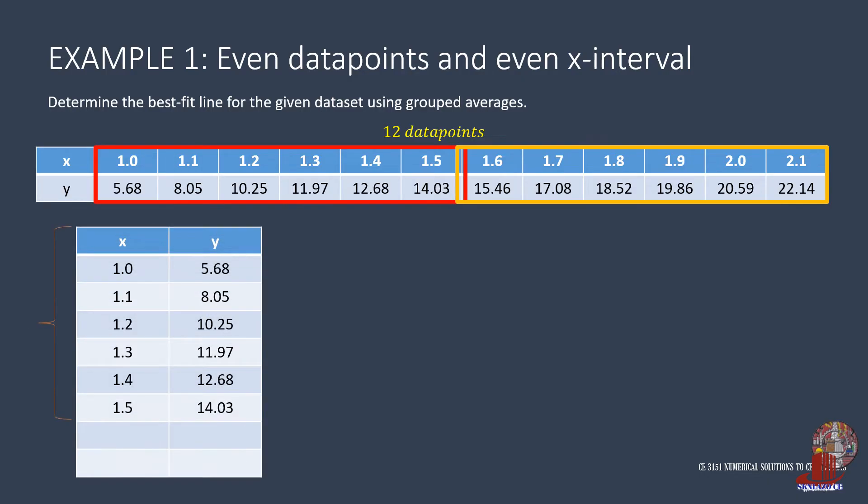For the first group, x has a total of 7.5. Then 7.5 divided by 6 is 1.5. The total of y is then 5.68 plus 8.05 plus 10.25 plus 11.97 plus 12.68 and 14.03, which is equal to 62.66. If this is divided by 6, y has an average of 3133 upon 300.